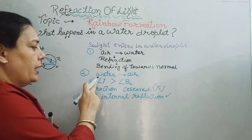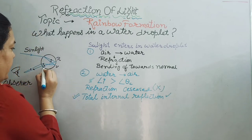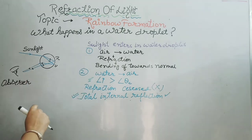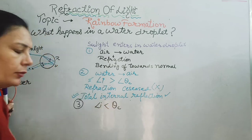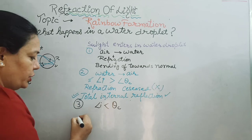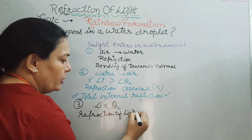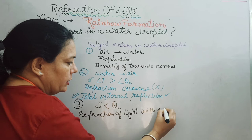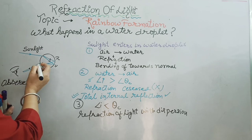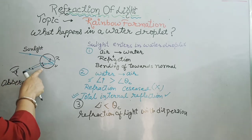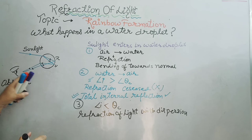Why does this happen? Because the angle of incidence is greater than the critical angle. Now the light reaches the surface one more time. This time — in the third case — the angle of incidence is less than the critical angle. So refraction takes place. Refraction of light takes place with dispersion happening inside the water droplet. These seven colors come out from this interface and reach the observer's eye, and we are able to see rainbow formation.